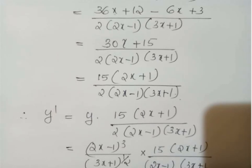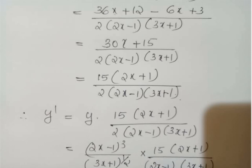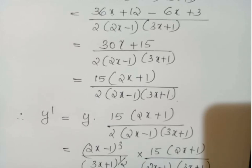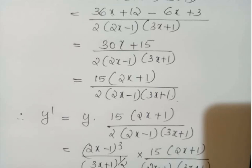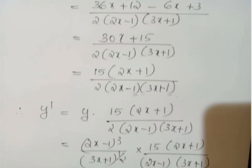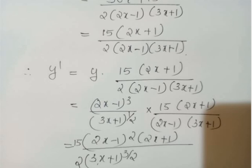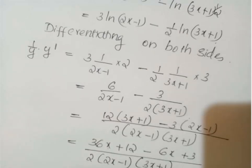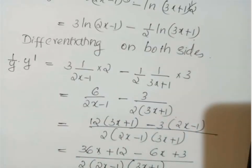One (2x − 1) term cancels, leaving y' = (2x − 1)² · 15(2x + 1) / [2(3x + 1)^(3/2)]. This is our answer. Using this technique we can differentiate complicated terms very easily.